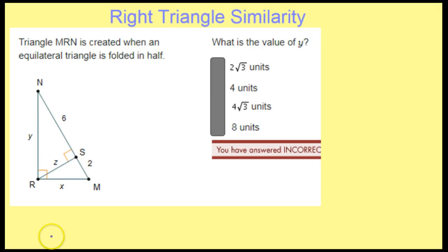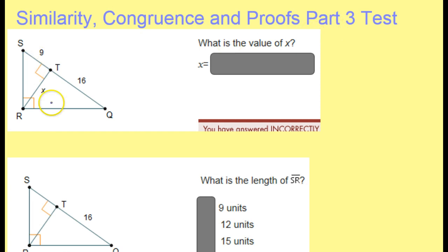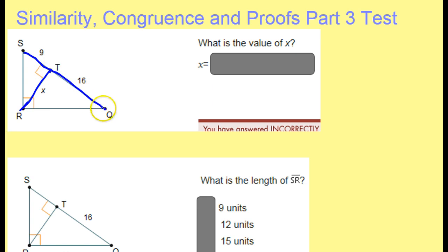This tutorial video is about right triangle similarity. Several of these questions revolve around having a right triangle with an altitude — a perpendicular line going out to the hypotenuse, making two smaller right triangles on the left and the right. That's a special situation and it creates a few formulas that you're going to want to write down.